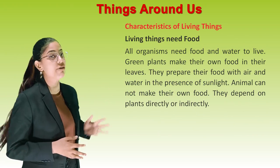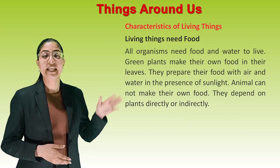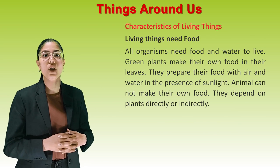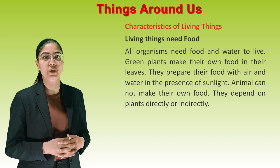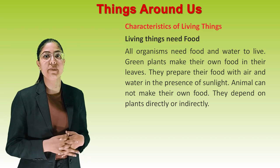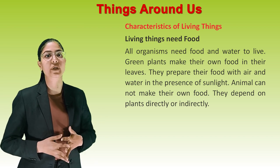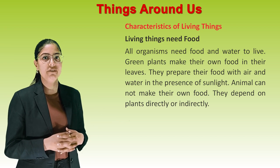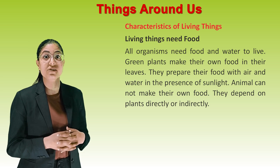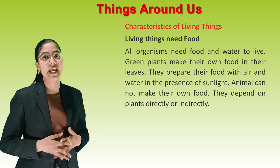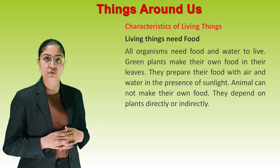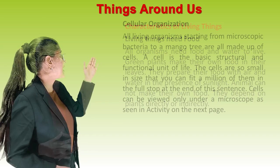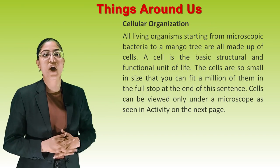Characteristics of living things. Living things need food. All organisms need food and water to live. Green plants make their own food in their leaves. They prepare their food with air and water in the presence of sunlight. Animals cannot make their own food; they depend on plants directly or indirectly.